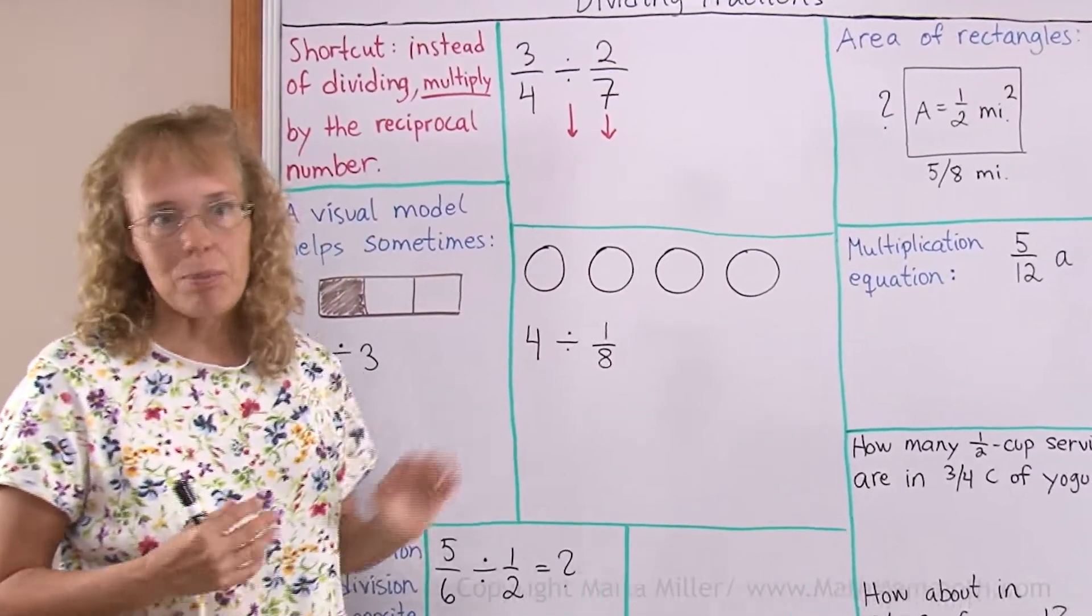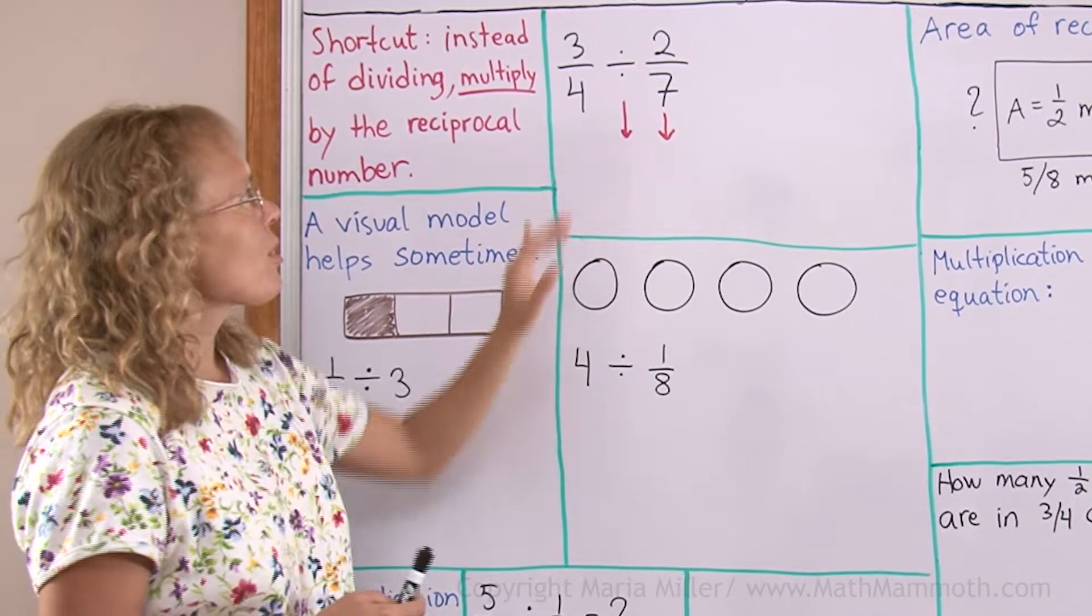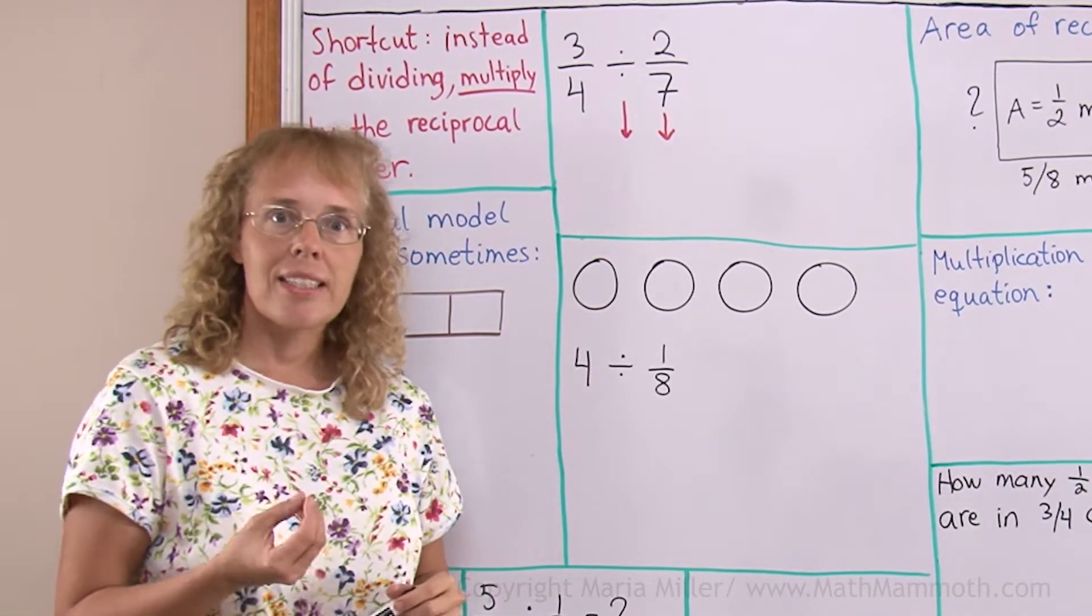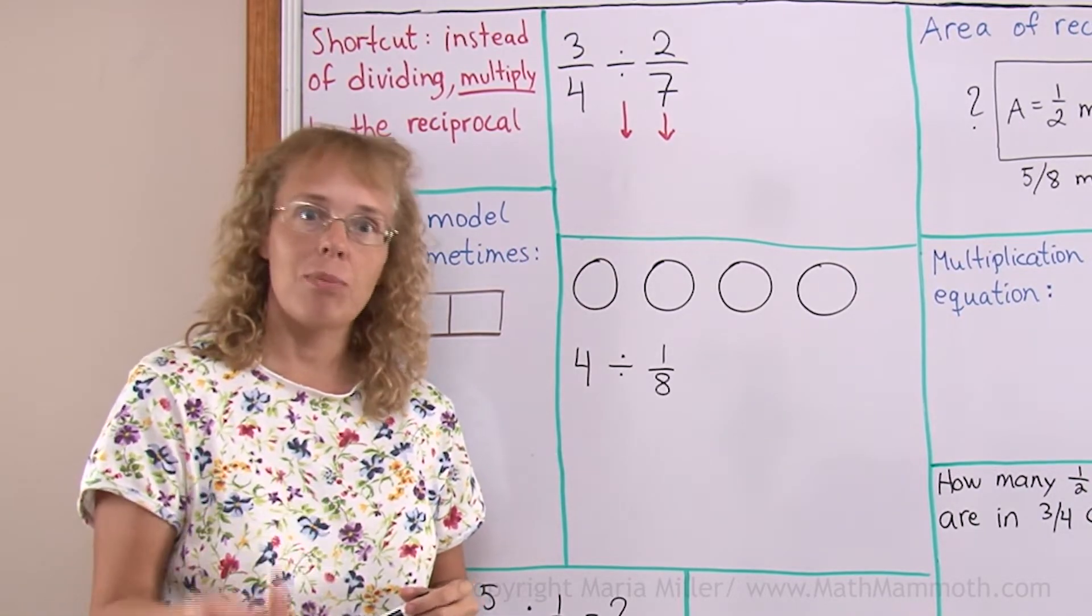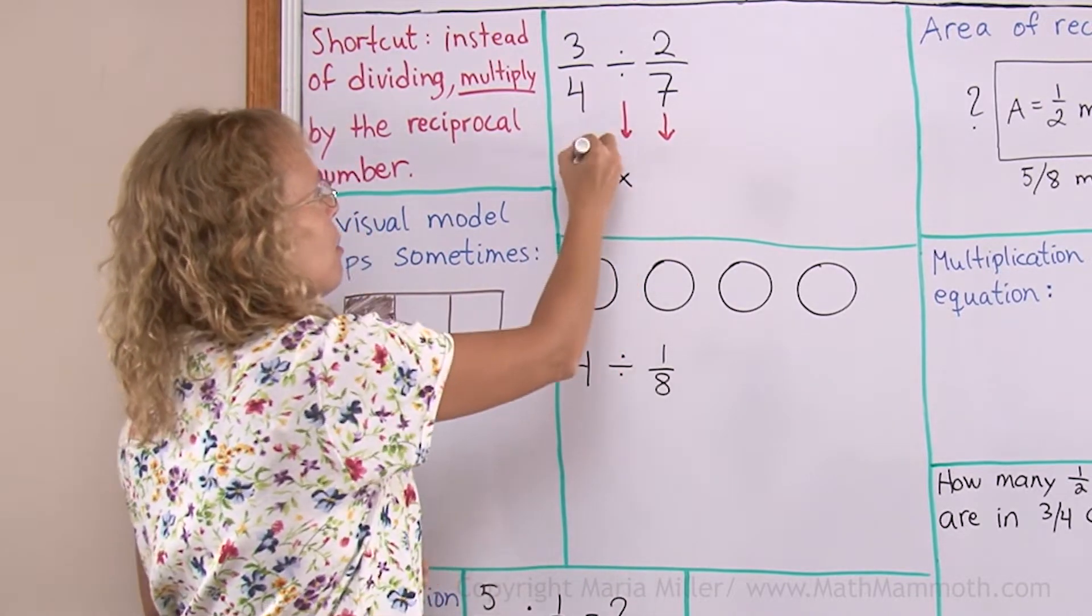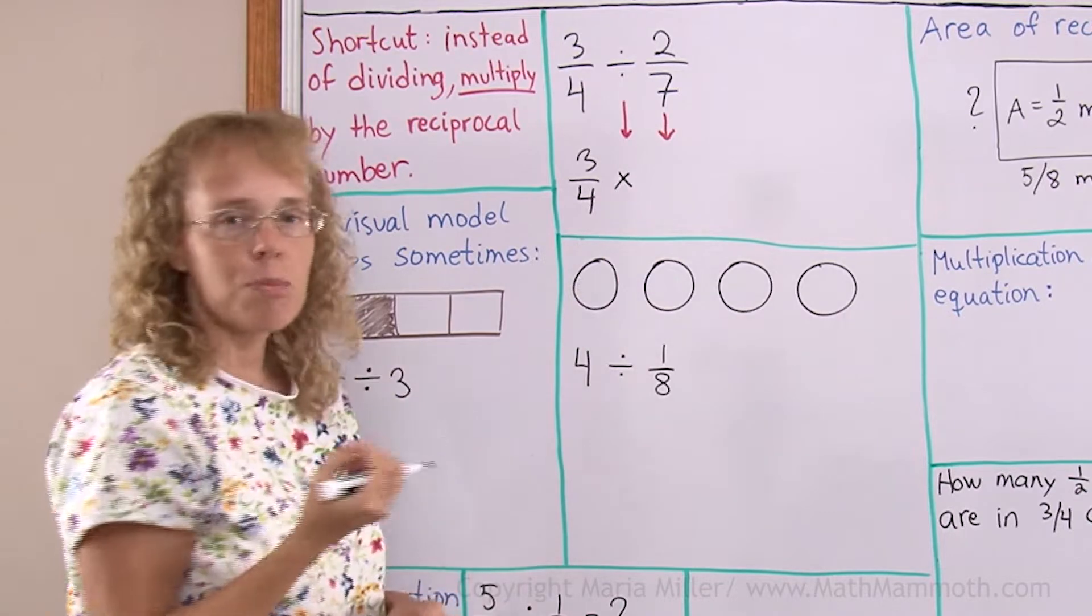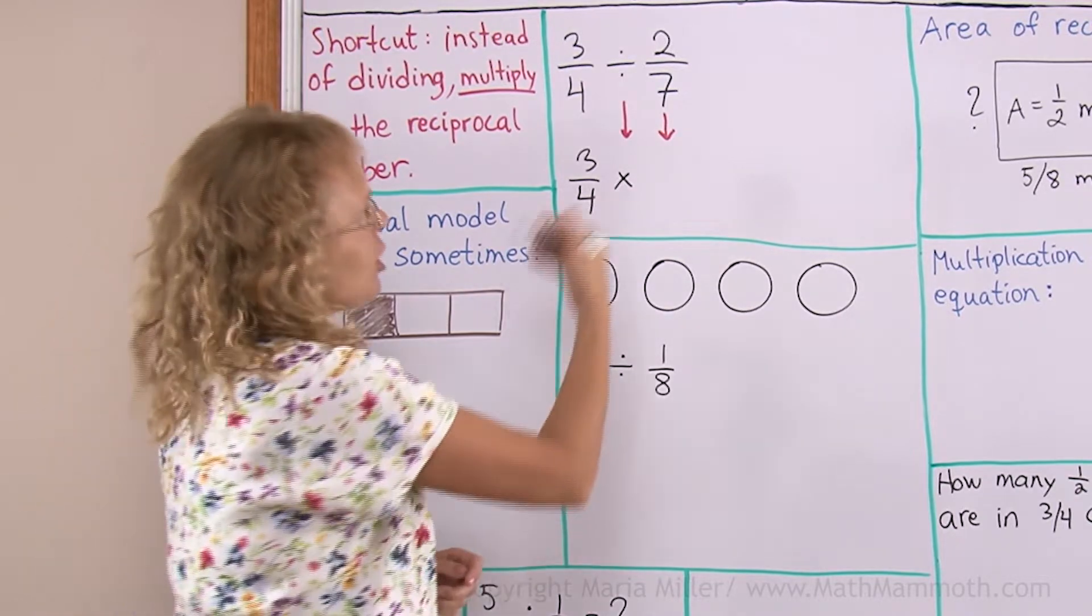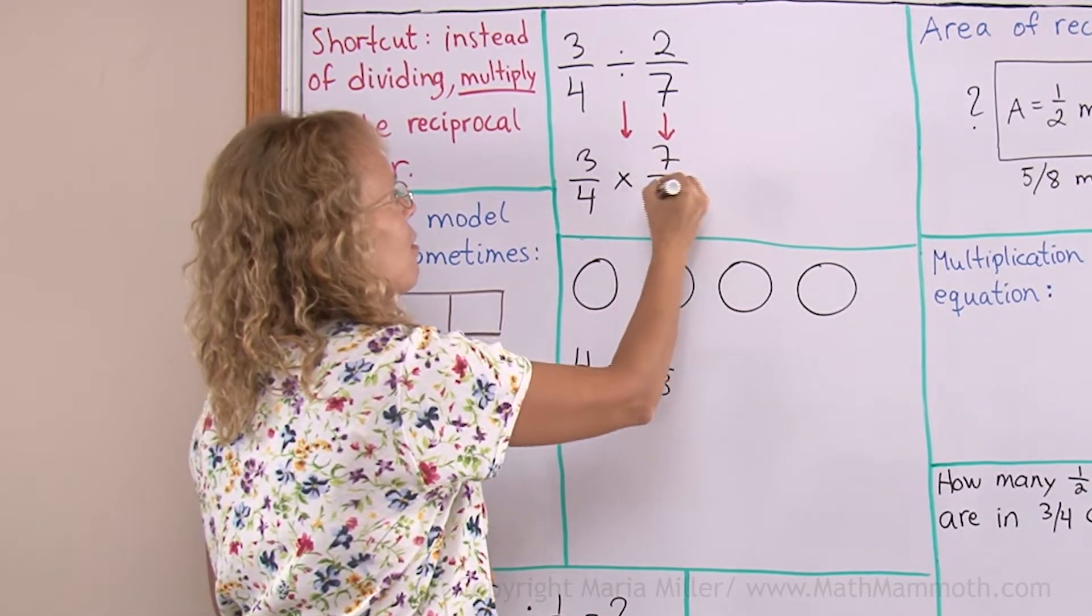But first, let us just review real quick with one problem: 3/4 divided by 2/7. Like I said, we're going to change this problem into a multiplication problem. This number won't change, but we're going to multiply by the reciprocal of 2/7. So you flip it, you get 7 over 2.